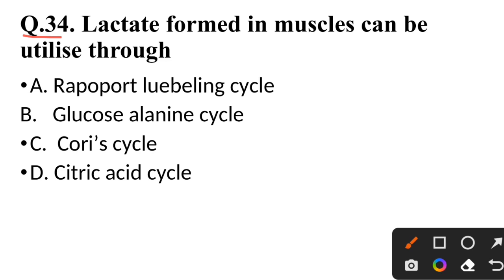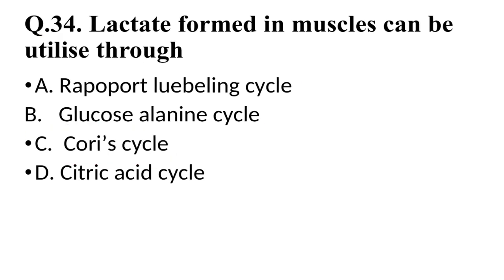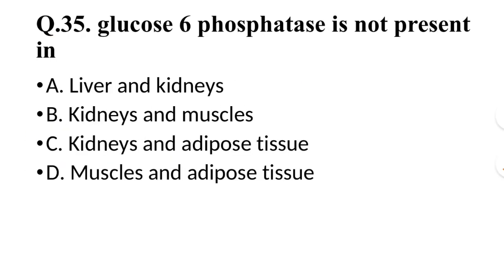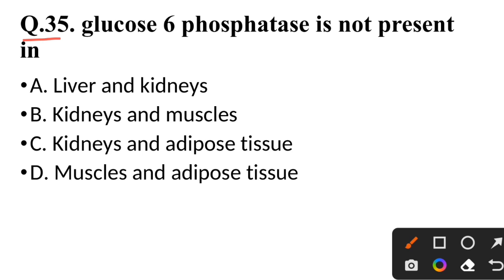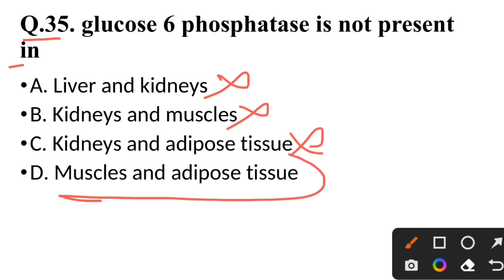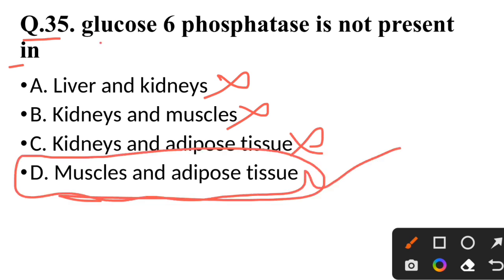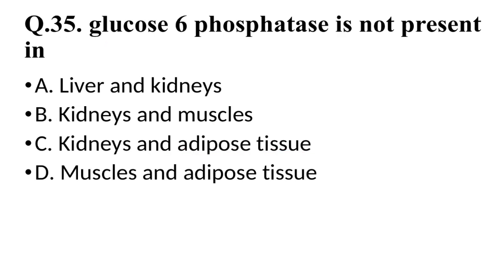Question 34: Lactate formed in muscles can be utilized through — not the living cycle, not glucose alanine cycle — correct answer is the Cori's cycle. Question 35: Glucose-6-phosphatase is not present in — correct answer is muscles and adipose tissue.